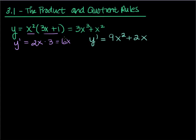So this is a little confusing, because it's like, which one is correct? Well, we know from our work before that 9x squared plus 2x is correct because we simply did an algebraic simplification. So where was the error? I assumed that I could take the derivative of each one and just multiply them together, and that is something that we cannot do in calculus.